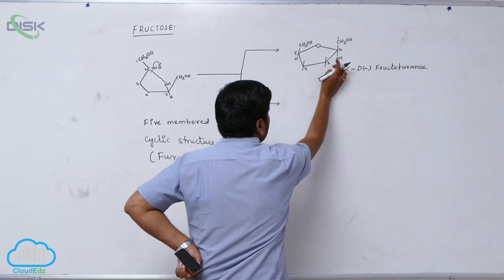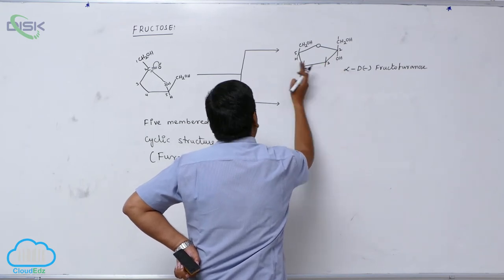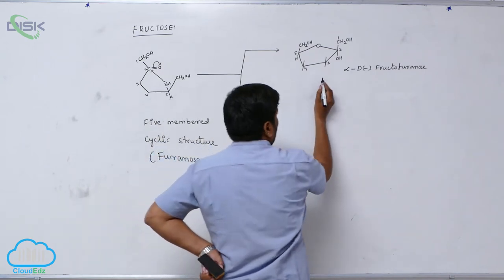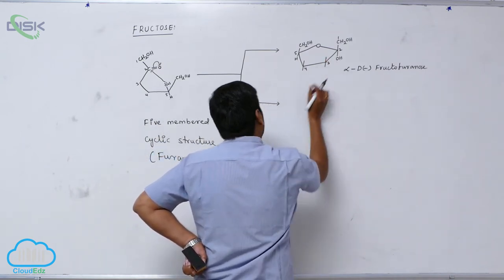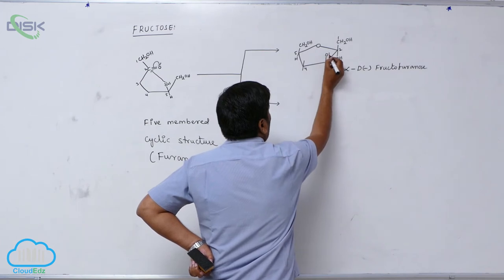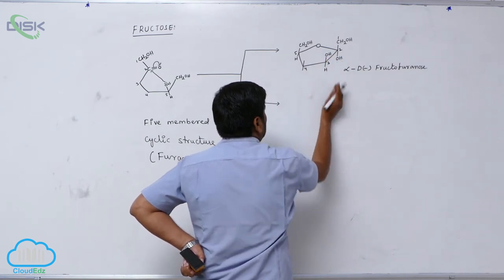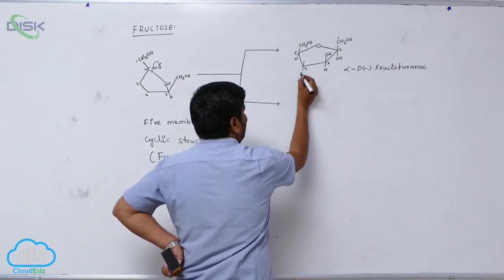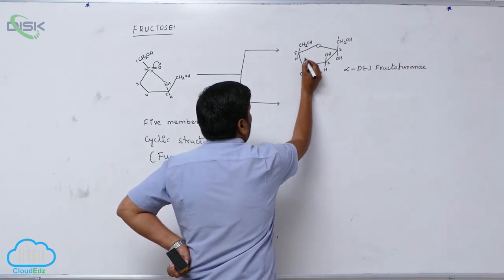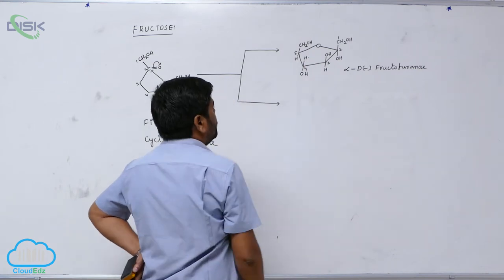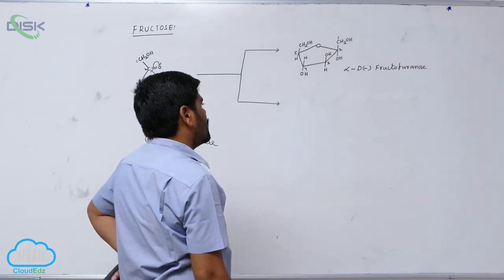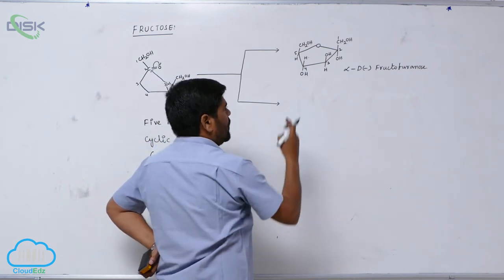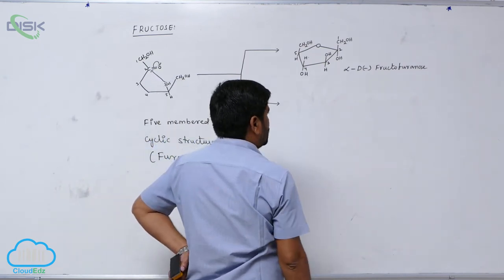Now, in this form, the third carbon OH is on the left side, which means it is above the plane, and here is hydrogen. The fourth carbon OH is on the right side, so it is below the plane. The fifth carbon is involved in the glycosidic linkage. This is alpha D-fructopyranose.